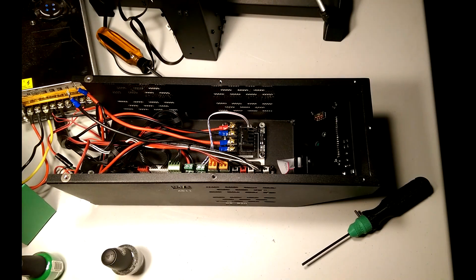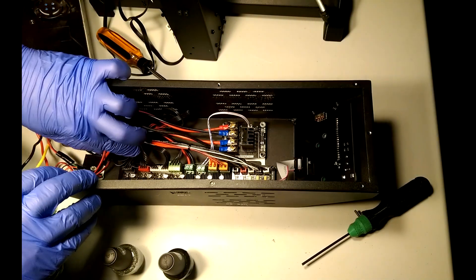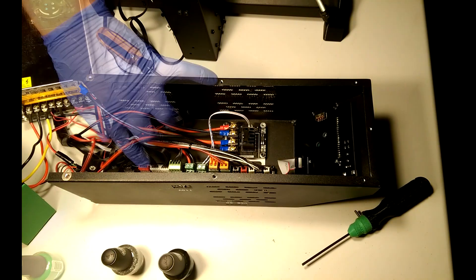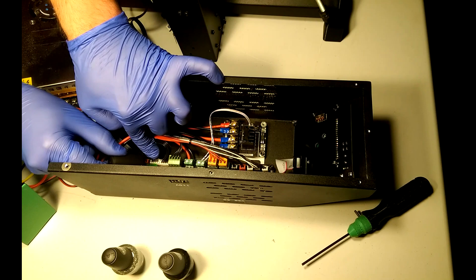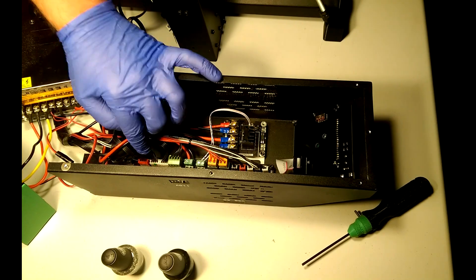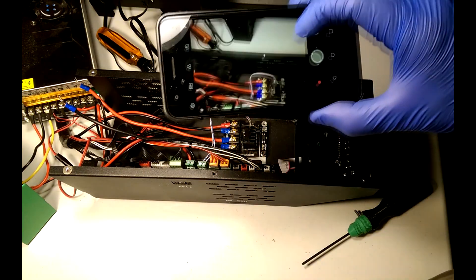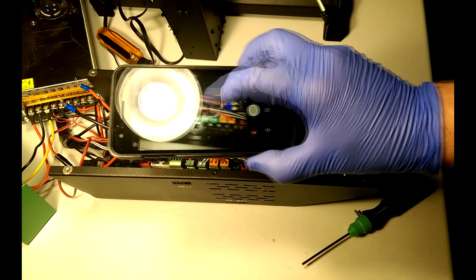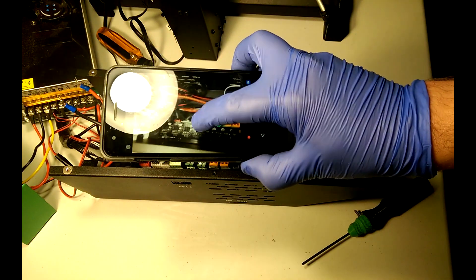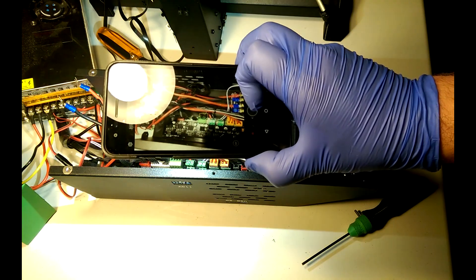Now if your memory is as bad as mine, you'll want to mark any similar connectors so they go back to the right place easily. For things like this I like to use just cheap nail polish - it's easy to apply and when you're done you can just chip it off. It's also a good idea if you're unsure of what you're doing or where things go to take as many pictures as possible beforehand. This will give you a reference when you go to put it back together.